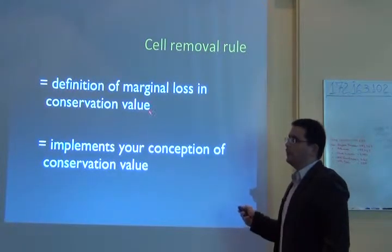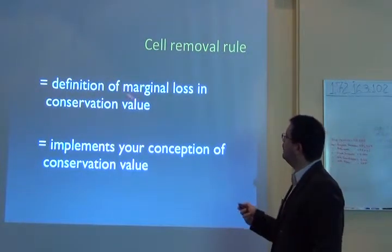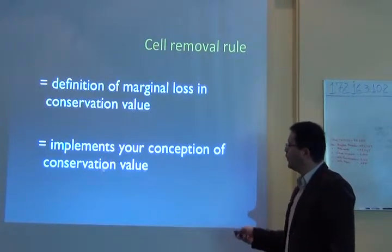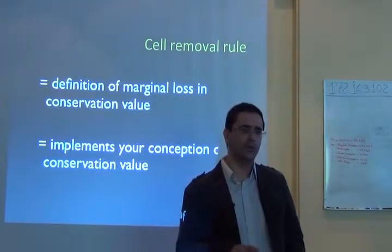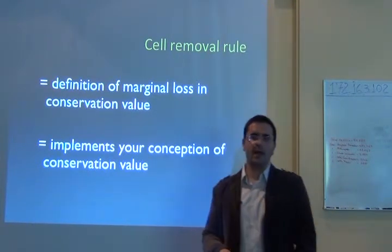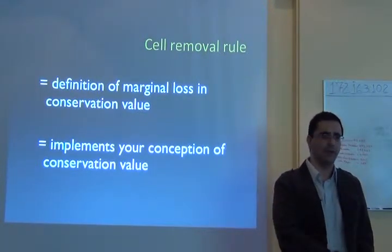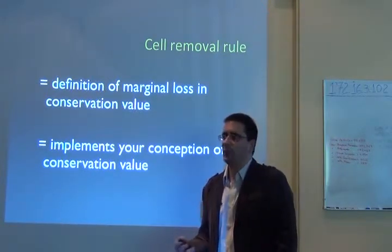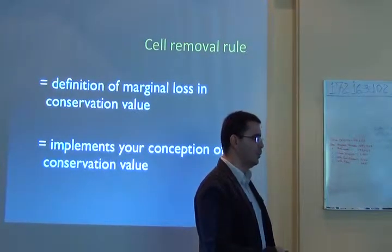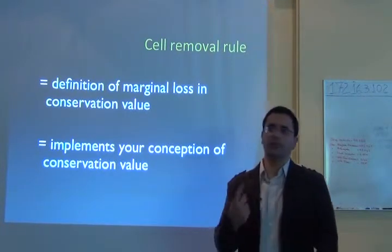You have to have a rule to define marginal value. The marginal loss represents the conservation value of the cell and implements your conception of conservation value. If you think rare species should be more important, you need a rule for selecting marginal value based on species rarity. If the most important criterion is to have cells with many species, you need a rule based on species richness per cell.